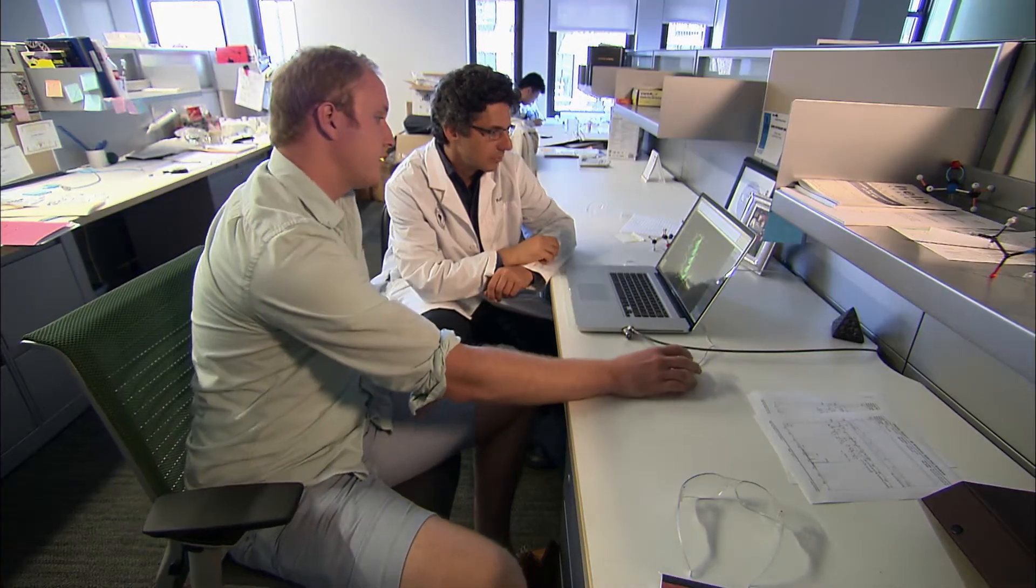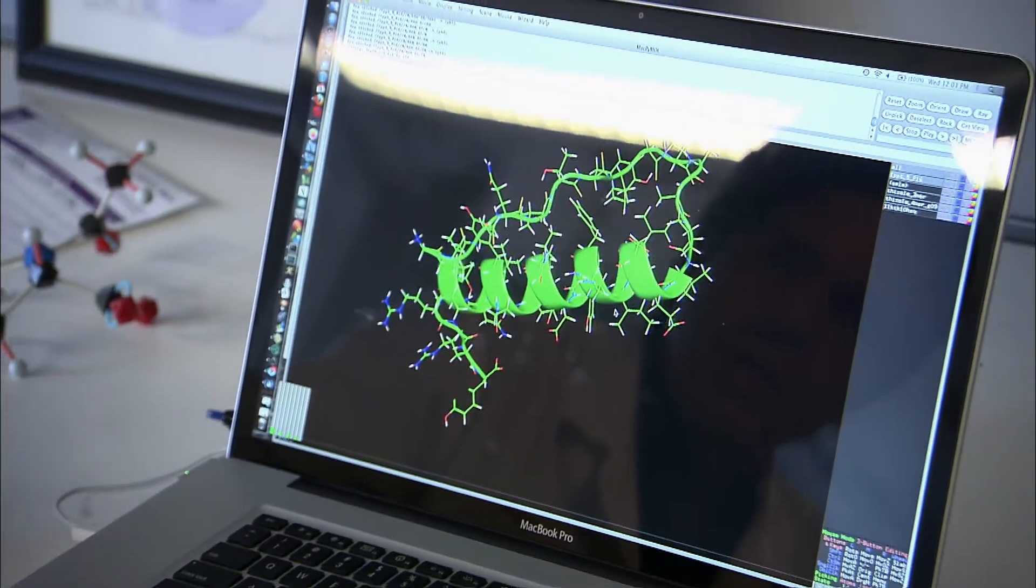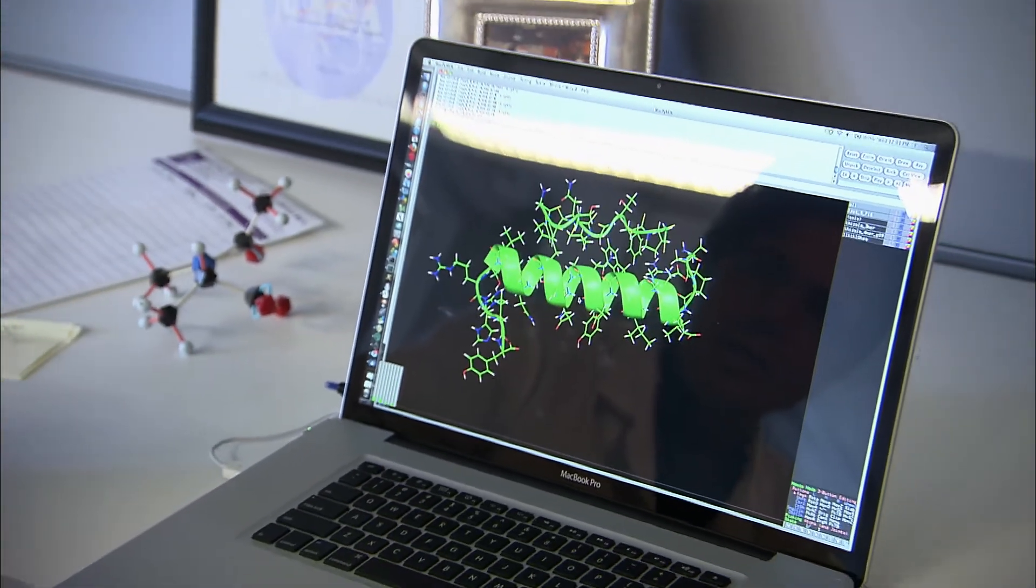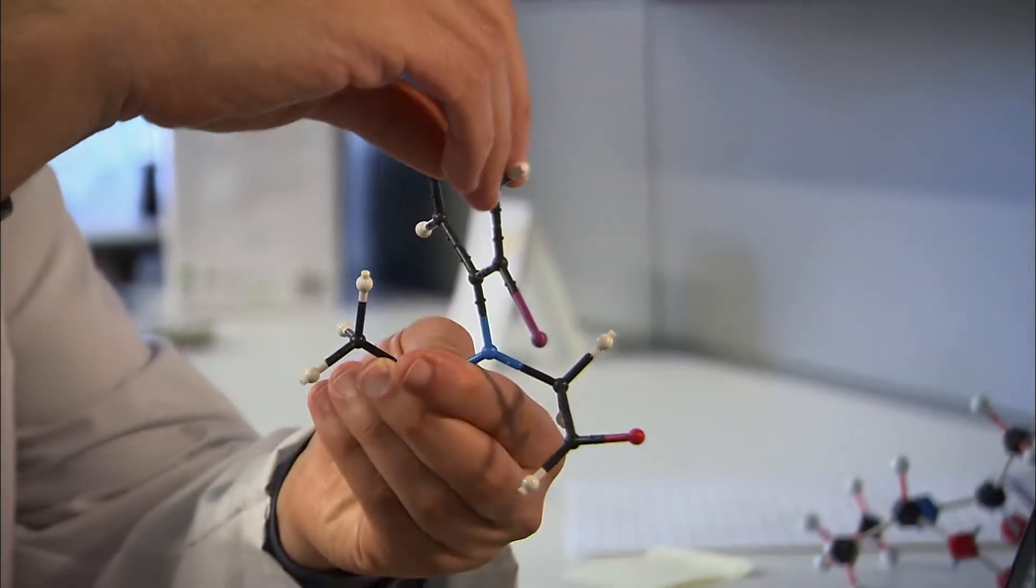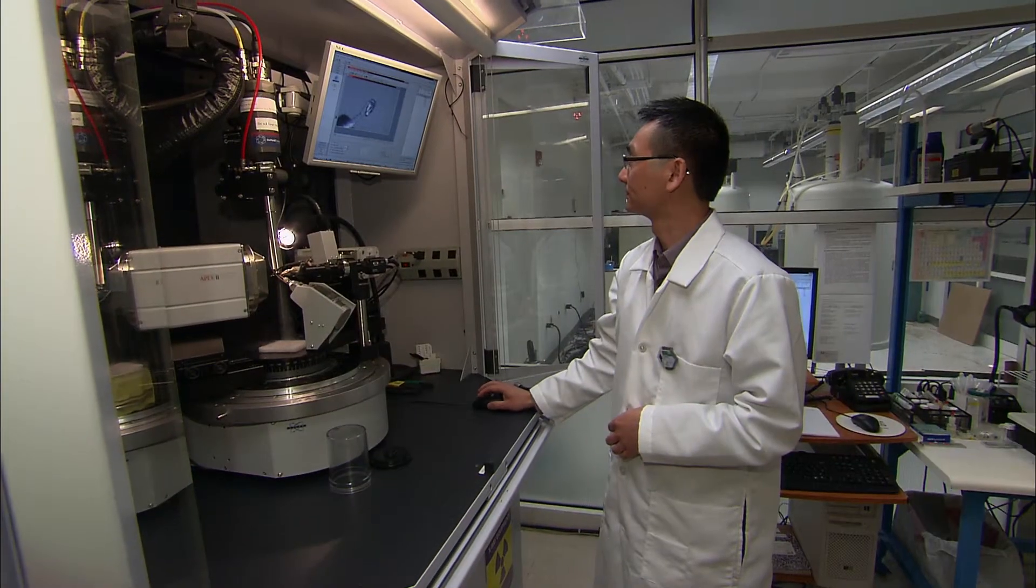Kent Kirshenbaum is an architect of sorts. He designs and builds incredible new structures in his lab at New York University. Only his cathedrals are so tiny and so complex. He needs special x-ray microscopes to see them.